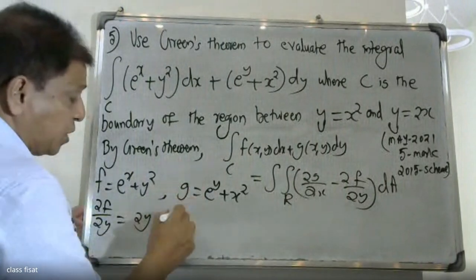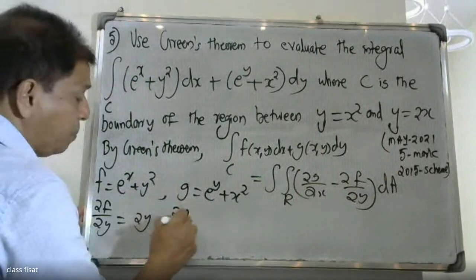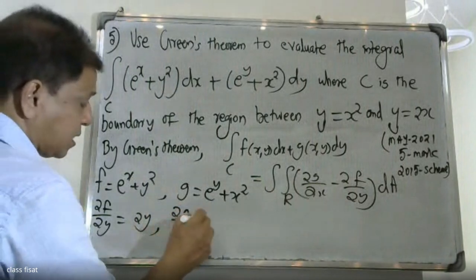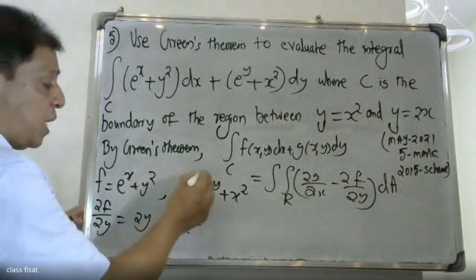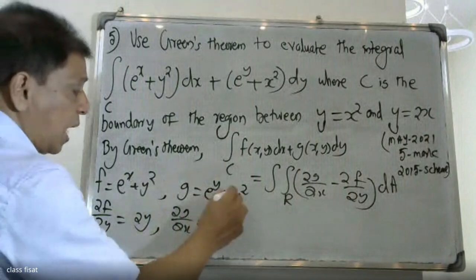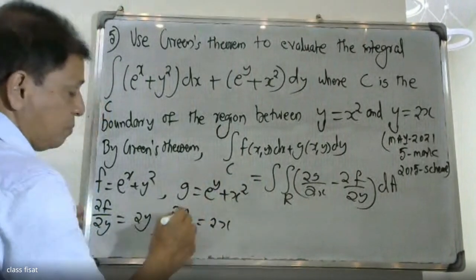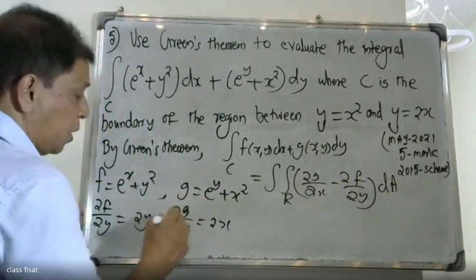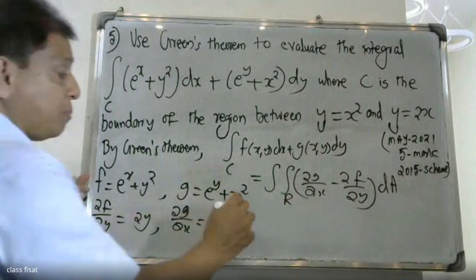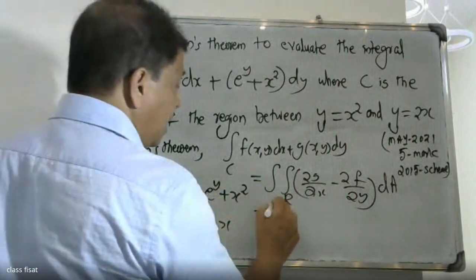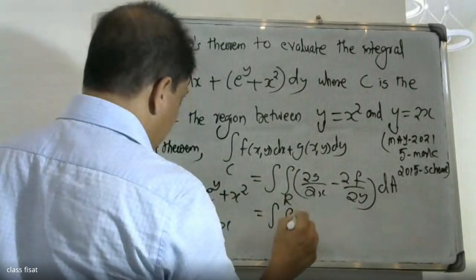We differentiate dou g by dou x. Substituting into the integral, we get dou g by dou x minus dou f by dou y, which simplifies to 2x minus 2y.